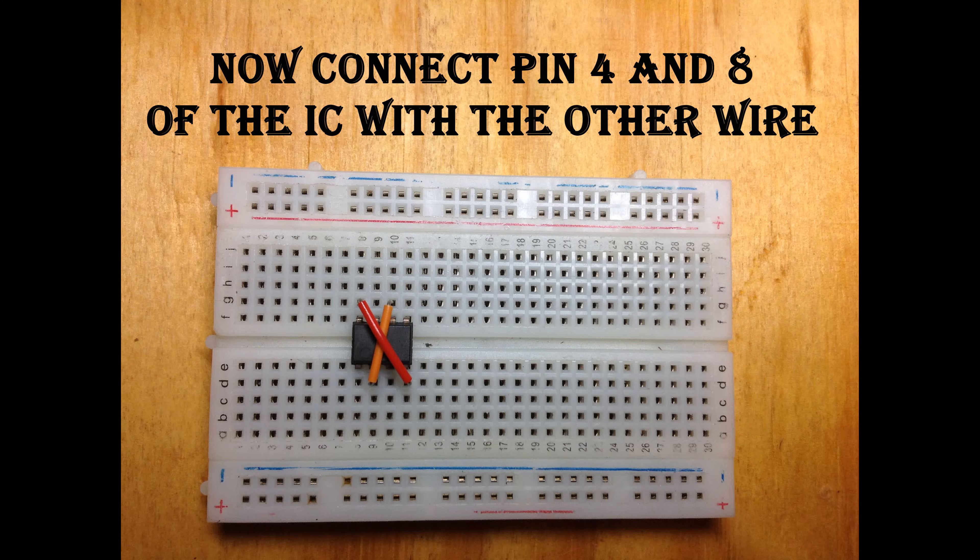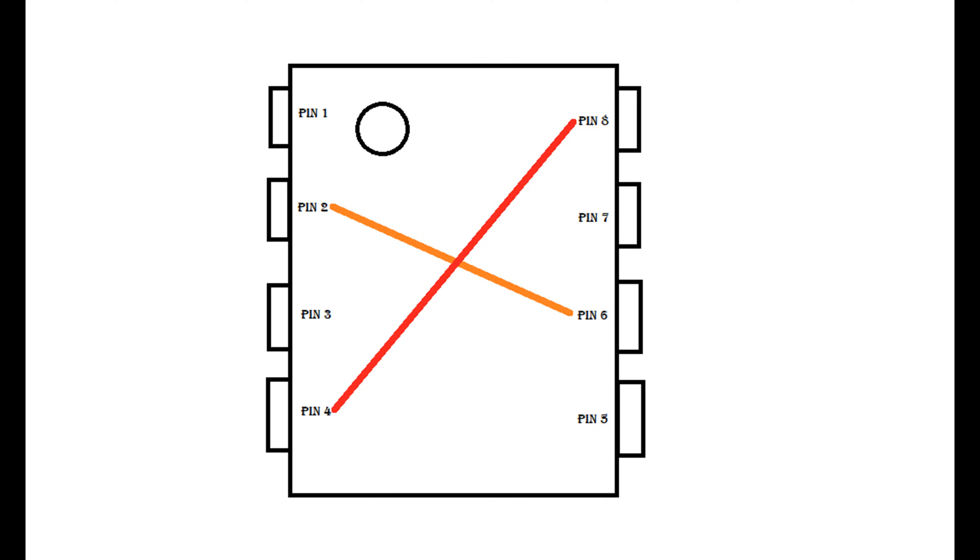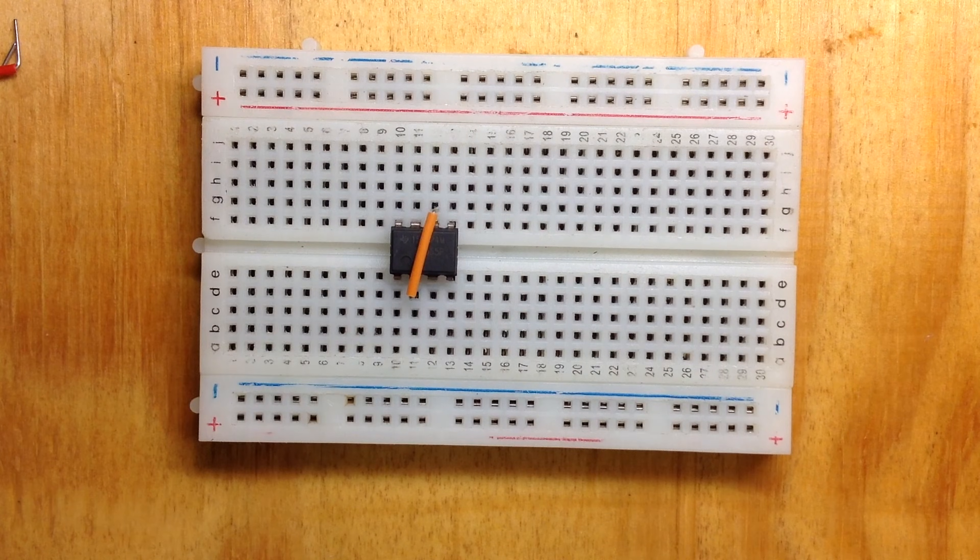Now use your jumper wire to connect pin 4 to pin 8 of the IC.